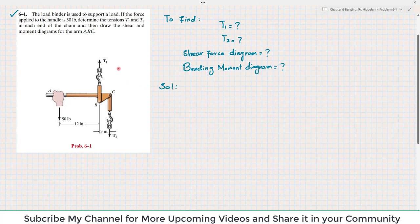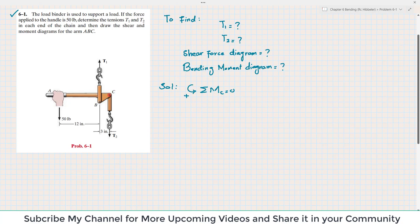First, we will find T1 and T2 using a free body diagram. The 50-pound force is applied, T1 is at point B, and T2 is at point C. We apply the first moment condition: the sum of all moments about point C is equal to zero, taking counterclockwise moment as positive. Taking moment about C is better so we can eliminate one unknown.